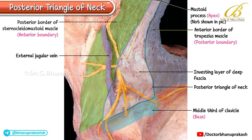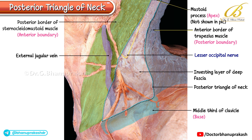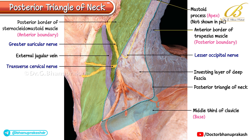Four important cutaneous nerves are visible piercing the investing fascia. The lesser occipital nerve emerges from the posterior border of the sternocleidomastoid and curves upward along the surface of the fascia. The greater auricular nerve runs upwards and forwards across the sternocleidomastoid. The transverse cervical nerve is located beneath the external jugular vein, dividing into ascending and descending branches.